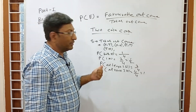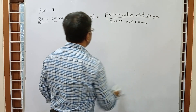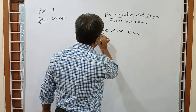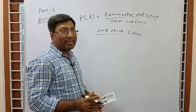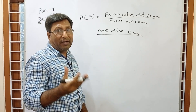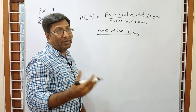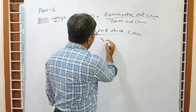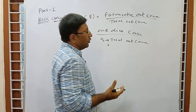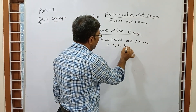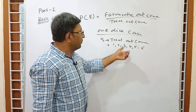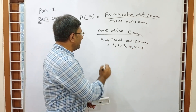Now we are going for the dice case — 1 dice case. A dice has 6 numbers: 1, 2, 3, 4, 5, 6. If we throw a dice we can get any one of these 6 numbers. So the sample space, or total outcome, is {1, 2, 3, 4, 5, 6}.